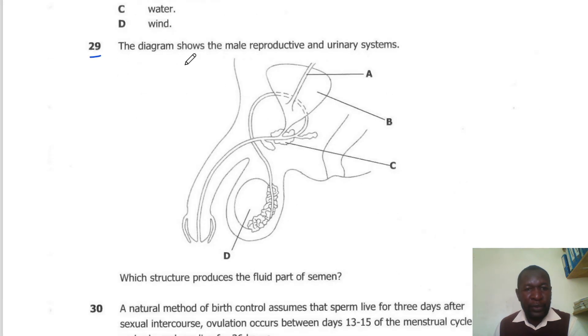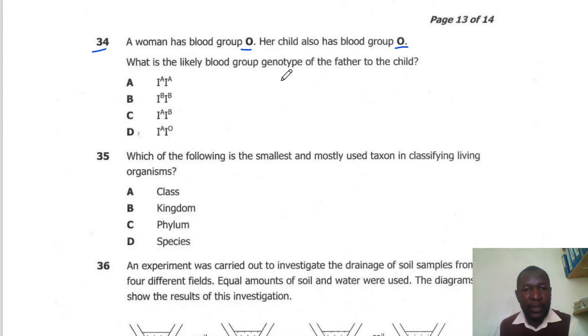Question 29. The diagram below shows the male reproductive system and urinary system. Which structure produces the fluid part of semen? Semen is produced by the prostate gland, which is Part C.